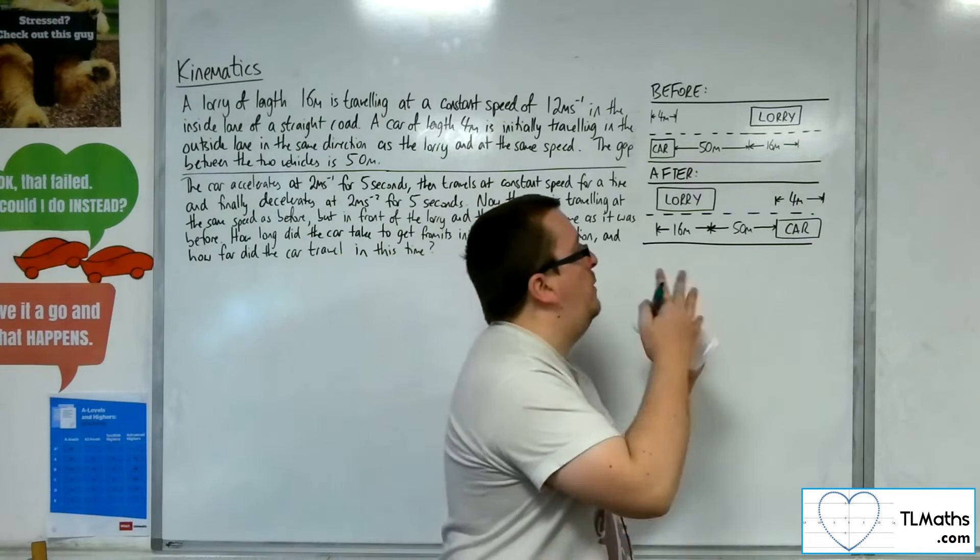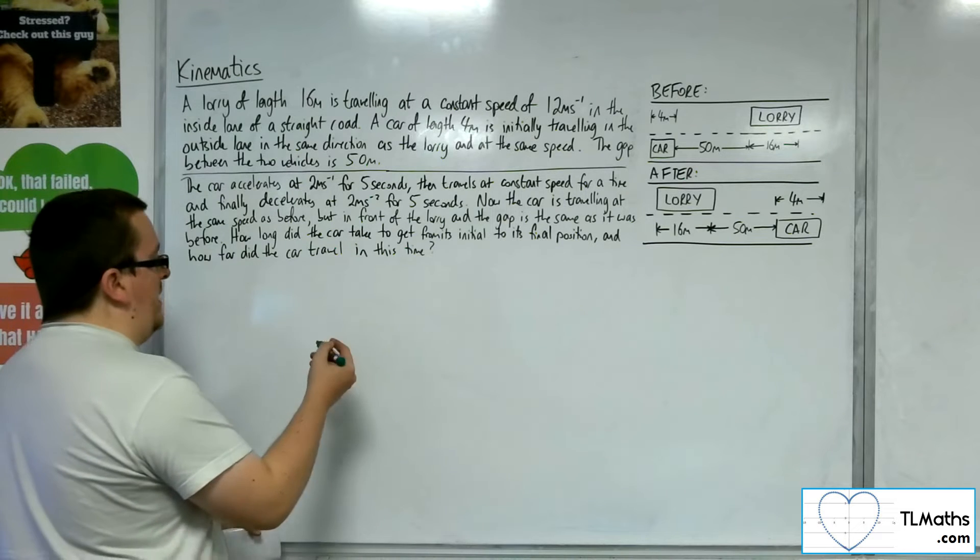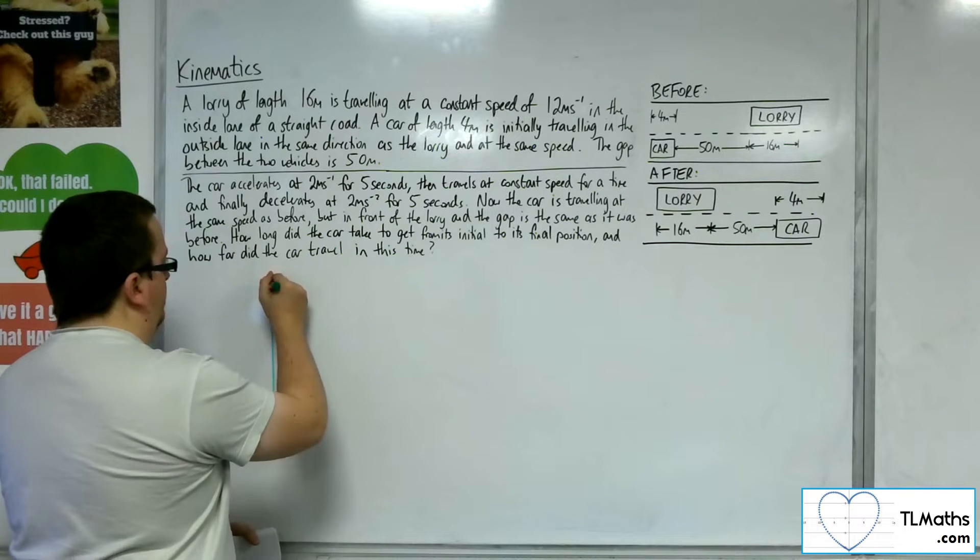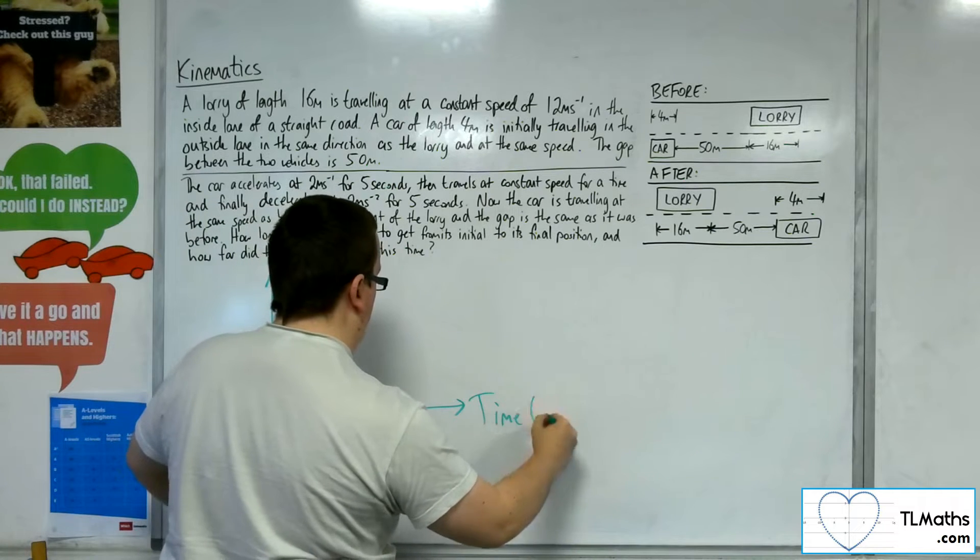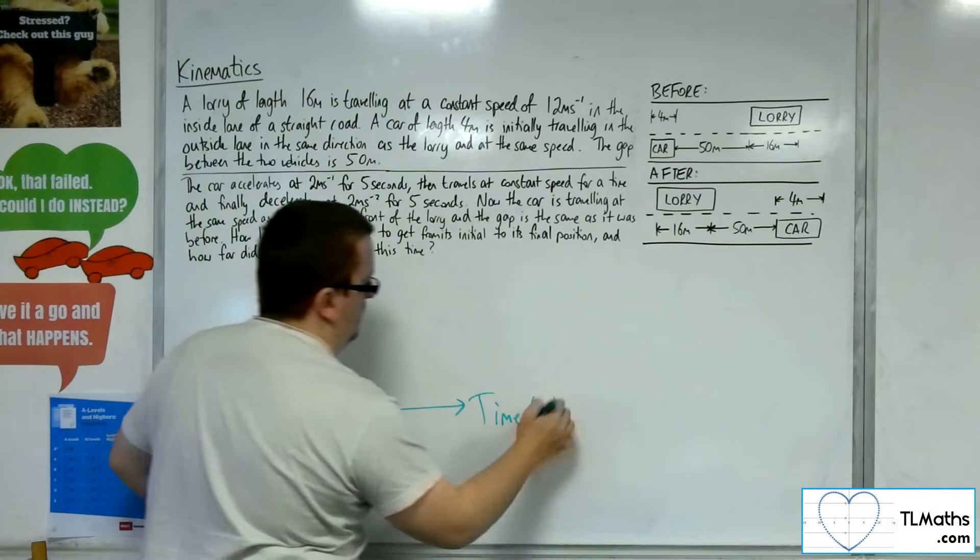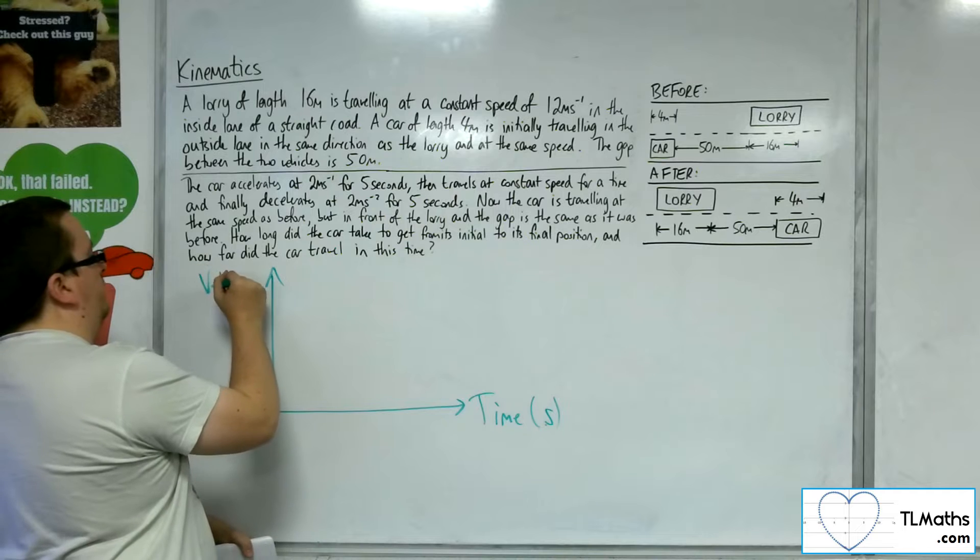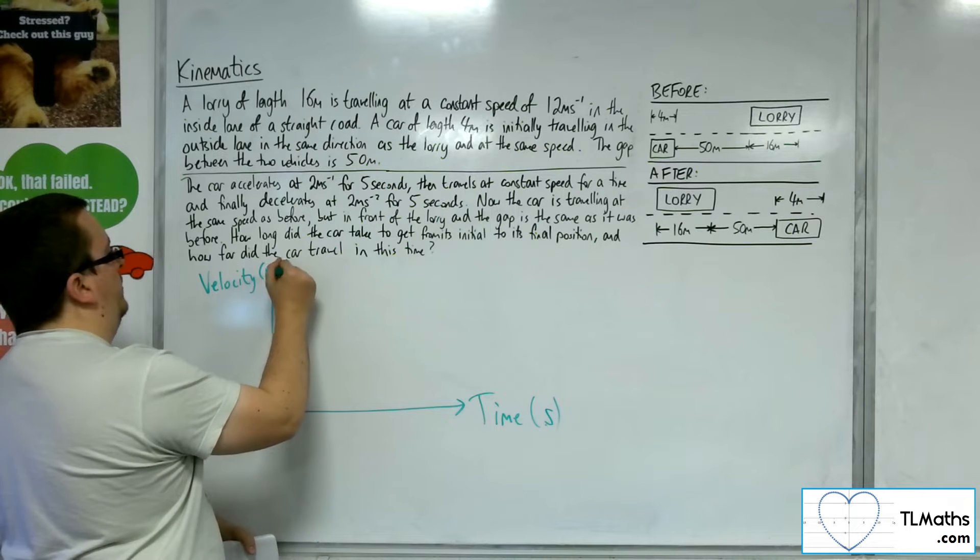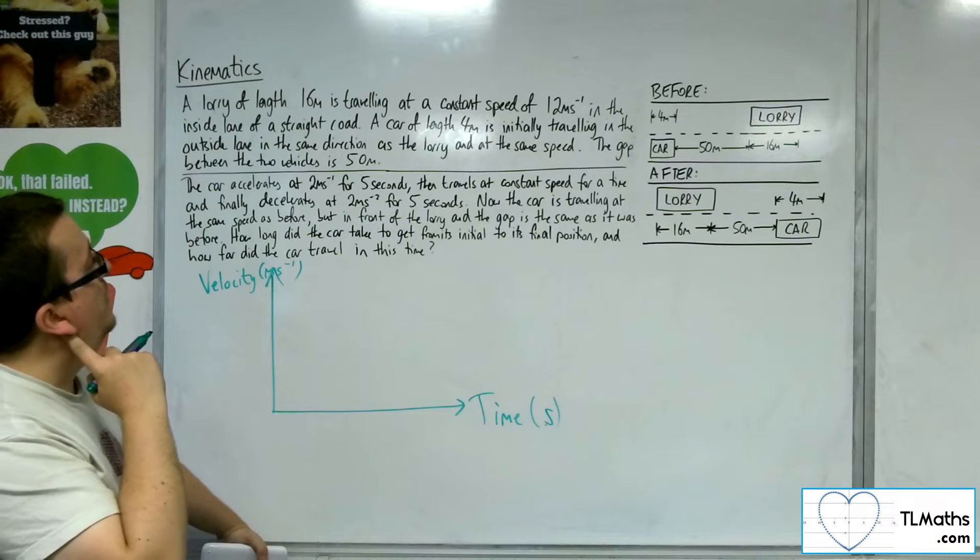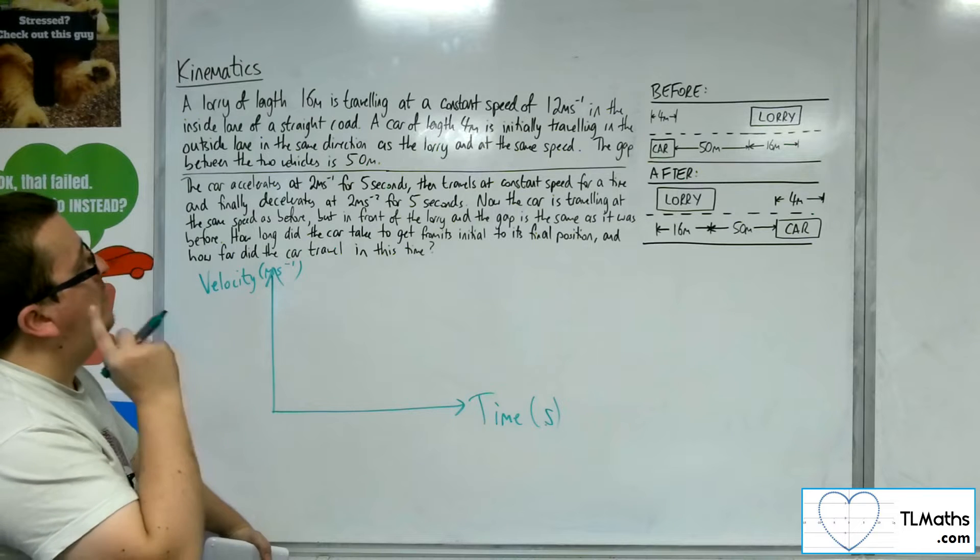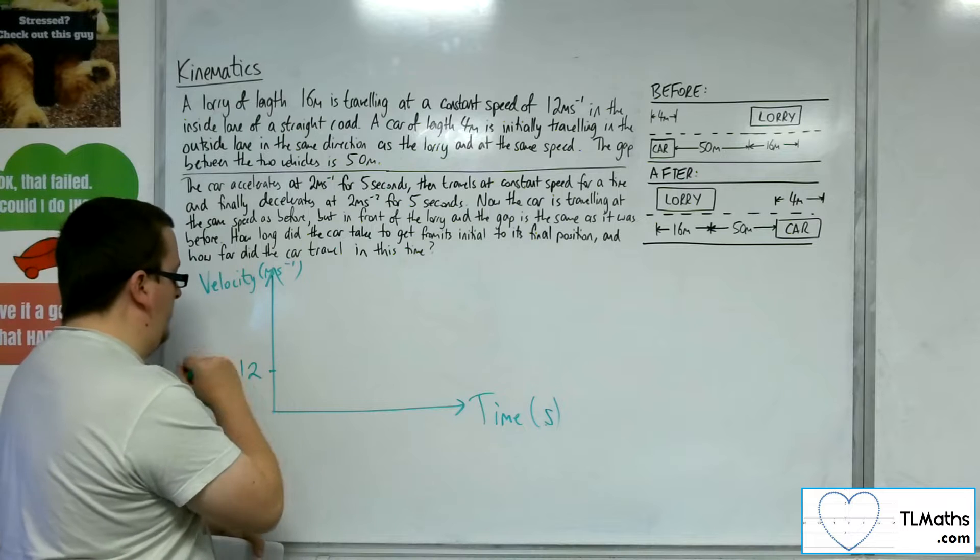What we want to do is set this up on a velocity-time graph, so we can really understand what's going on. Here's time in seconds, and we're going to have velocity in metres per second. We know that both the car and the lorry are travelling at 12 metres per second.